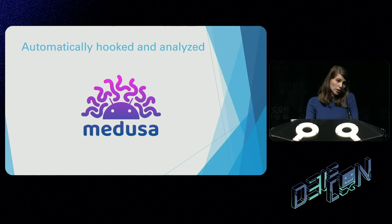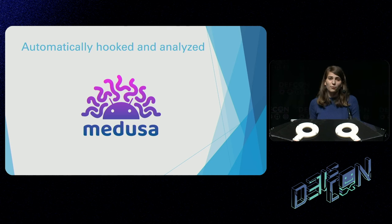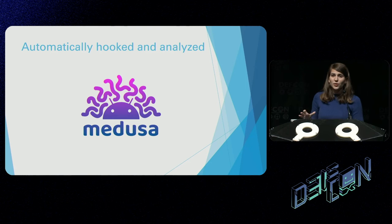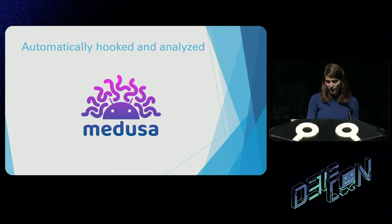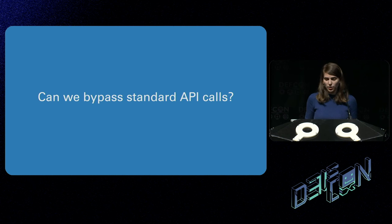Furthermore, there are default frameworks inside Android. You might be familiar with Frida, which hooks methods across many different platforms while the application is running, or hooking frameworks designed specifically for Android like Medusa, which by default hooks many of these Android APIs targeted for code loading and will dump the executable so you can easily statically analyze that additional binary. So when I started working on this presentation, I wanted to think: is there a way to bypass these common API calls to hide the dynamic modification of my Android application?